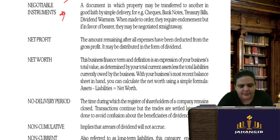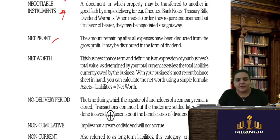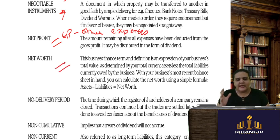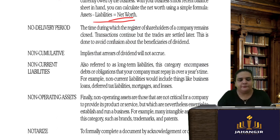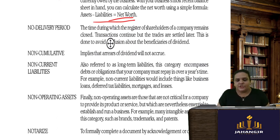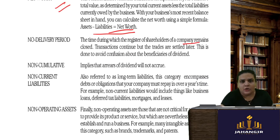A currency note is like a promissory note — merely by transfer, you become the owner. Net profit is derived from gross profit by deducting all other expenses. Net worth is the worth of the business: total assets minus liabilities equals net worth.